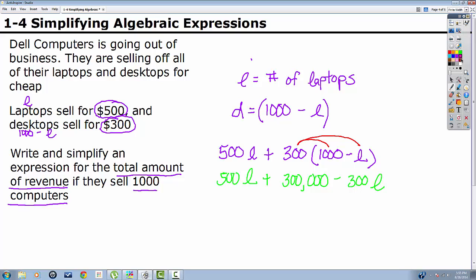That gives me these two like terms. 500L minus 300L leaves me with 200L plus 300,000. This formula will give me my total amount of revenue, total amount of money made. That's it.